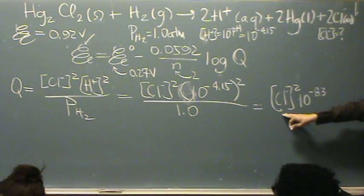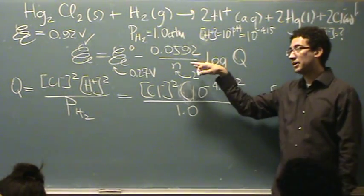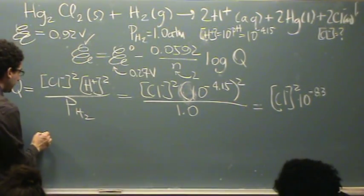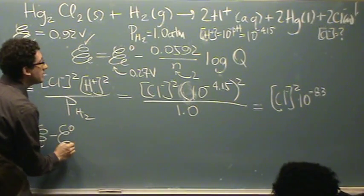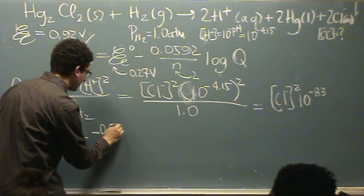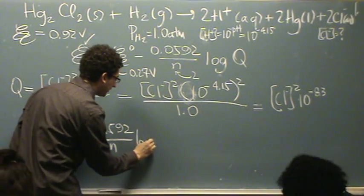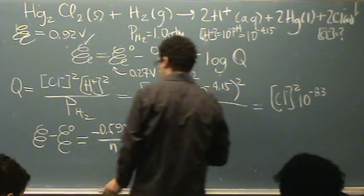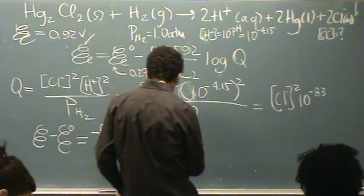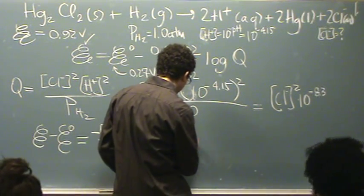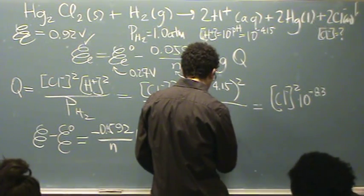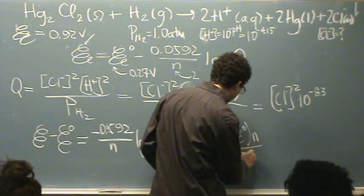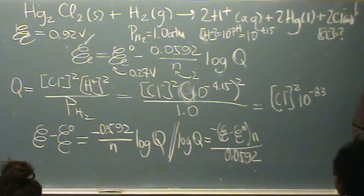So is that okay? So everything, this is the only unknown. Would you like me to mathematically rearrange this equation? So now I'm going to solve this. This is a mess. So this would be E minus E standard equals minus 0.0592 divided by n log of Q. So just moving things around. Now I'm going to divide through the n... Oh, I forgot a 0 here, 0.0592.